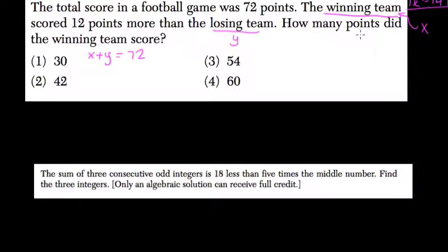So x scored 12 more points than y. So x is equal to the lower score plus 12. And now we have our system of equations.